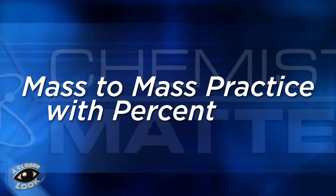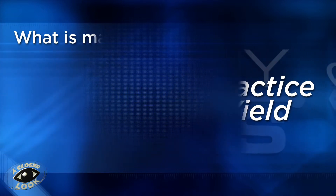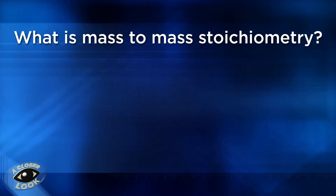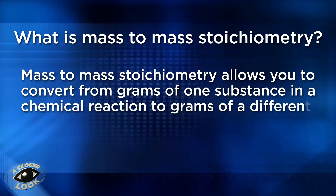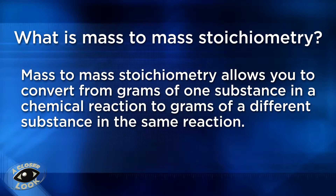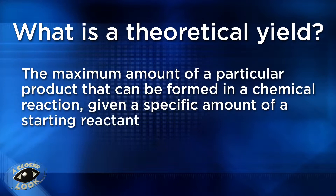In this closer look, we'll investigate mass-to-mass stoichiometry, and then learn how to calculate percent yield. Mass-to-mass stoichiometry allows you to convert from grams of one substance in a chemical reaction to grams of a different substance in the same reaction. The most likely reason you would need to perform mass-to-mass stoichiometry is to determine the theoretical yield in grams of a product in a chemical reaction. Theoretical yield is the maximum amount of a particular product that can be formed in a chemical reaction given a specific amount of a starting reactant.